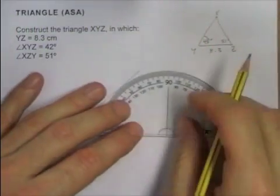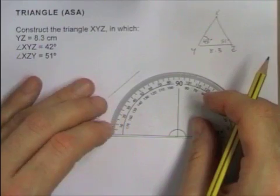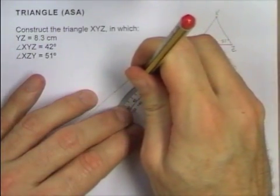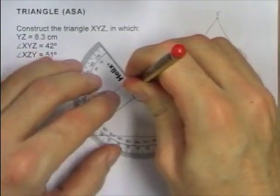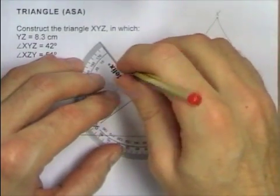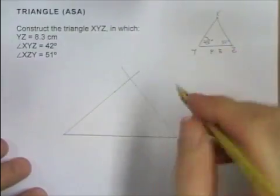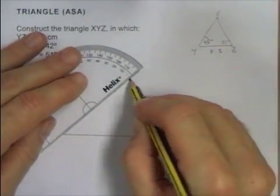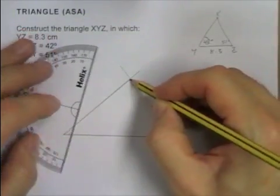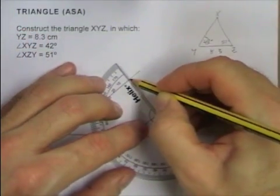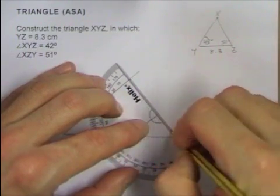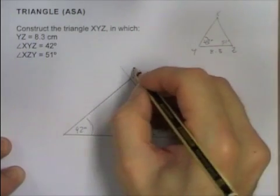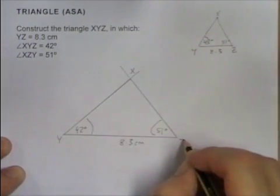Then from the other end it's 51. Line it up precisely. Outside scale this time. 51. And back. And that's my construction lines for my triangle. And then I guess I should just darken them up. So the actual triangle is in there. And then label the sides. 42 degrees. And that's X, Y, and Z.